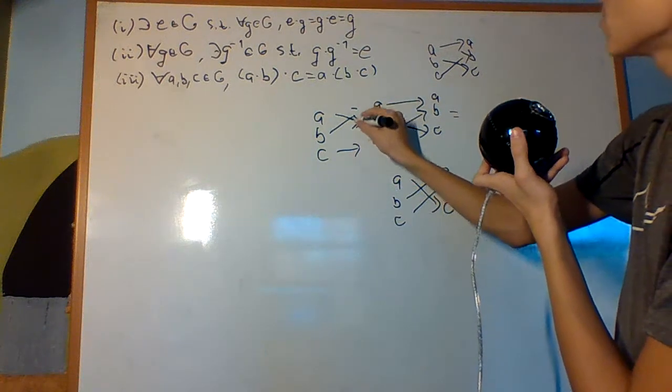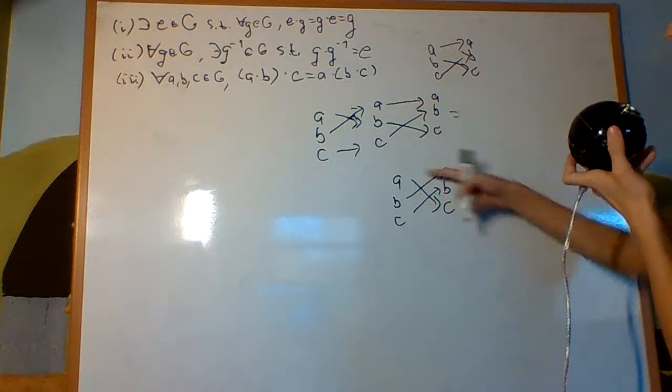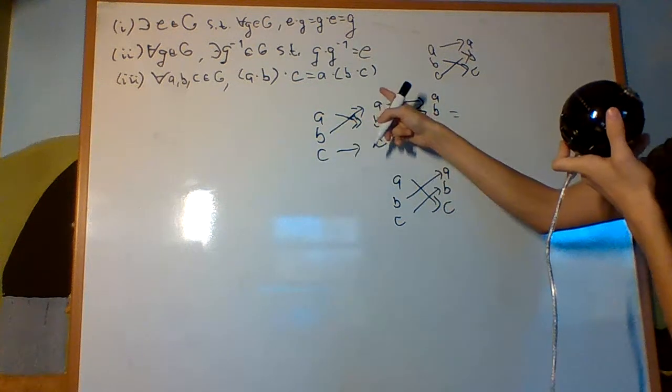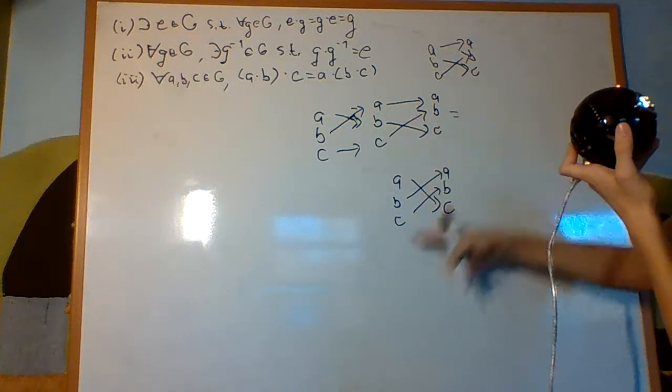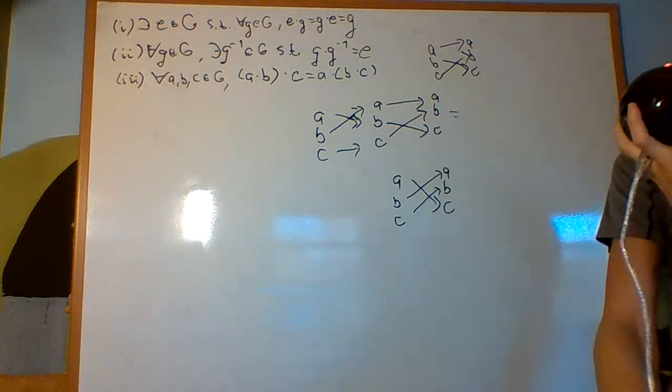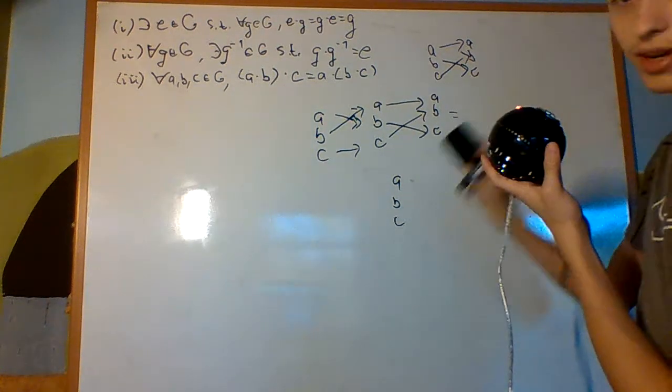Well, A goes to B, B goes to... So, A goes to B, which goes to C. A goes to C. B goes to A, which goes to A. B goes to A. C goes to C, which goes to B. C goes to B. We got the same thing out as if we did it the normal way. That's what associativity is.